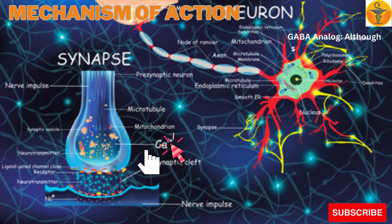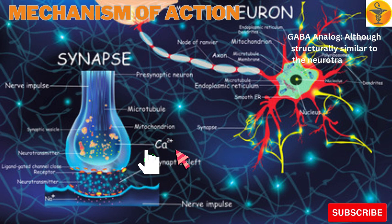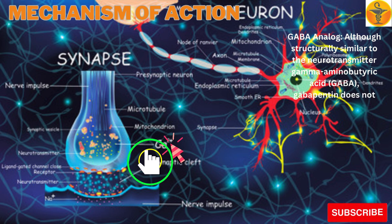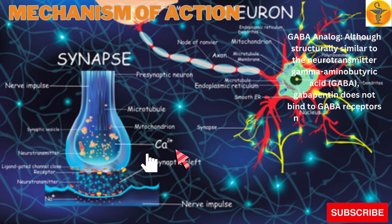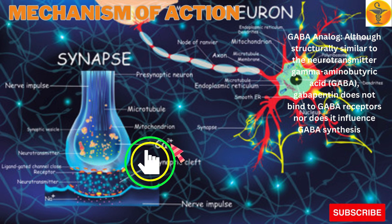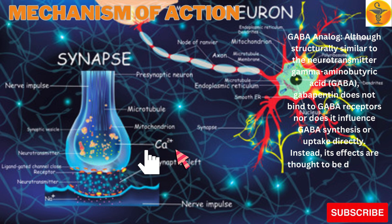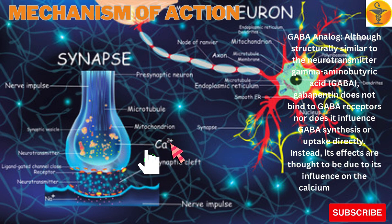GABA Analog: Although structurally similar to the neurotransmitter gamma-aminobutyric acid (GABA), gabapentin does not bind to GABA receptors, nor does it influence GABA synthesis or uptake directly. Instead, its effects are thought to be due to its influence on the calcium channels.